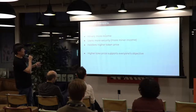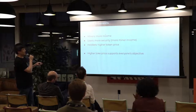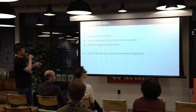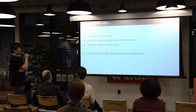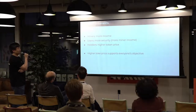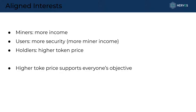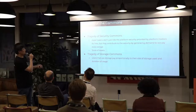On interest alignment: miners want more income and a higher token price, users want more security, and hodlers want a higher token price. Basically higher token price supports everybody's objective, making it much easier to design a governance mechanism because everybody is looking at the same goal.